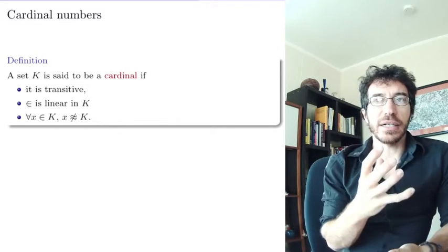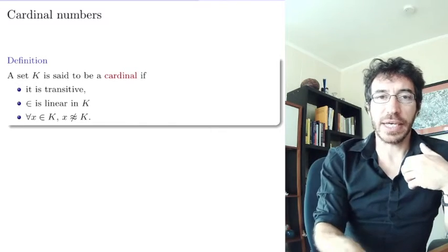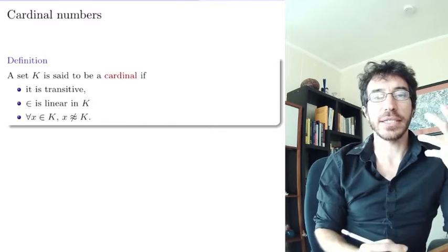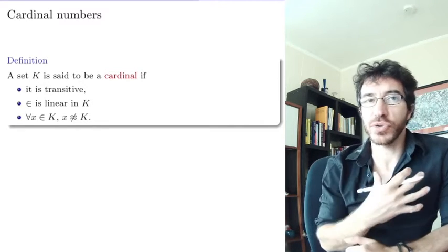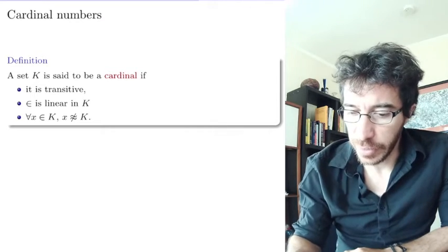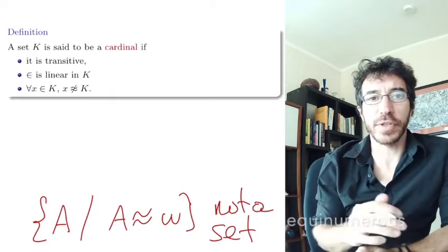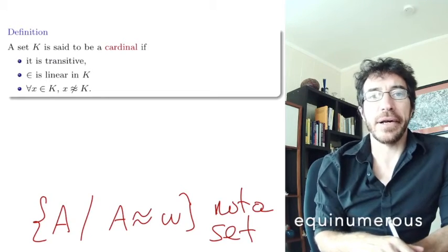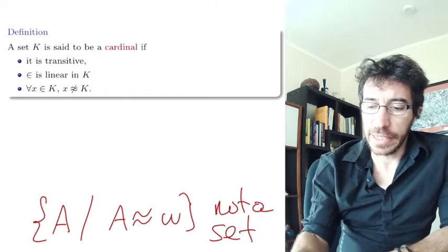But we cannot take all the things that have size omega. This is not a set because we cannot use any axiom to define the set of all things that have size omega. The set of all A's that are equimorphic to omega, or any other set, is not a set. This is a class.